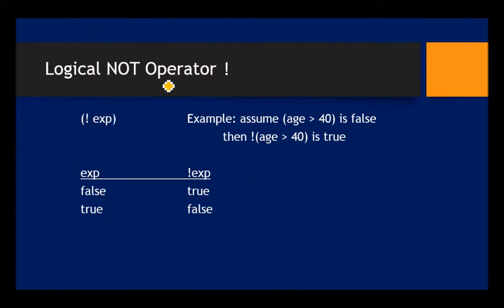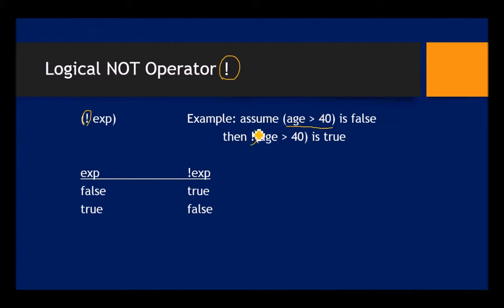Then we have the logical NOT operator, which is the exclamation point (!). You put it in front of any expression that results in true or false, and it inverts the logic. So if 'age greater than 40' was false and you say NOT that, then it becomes true — it's just the opposite logic.